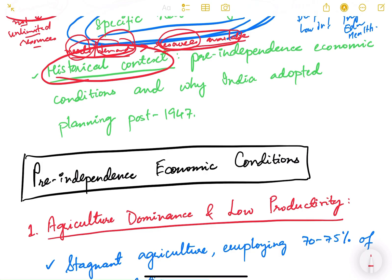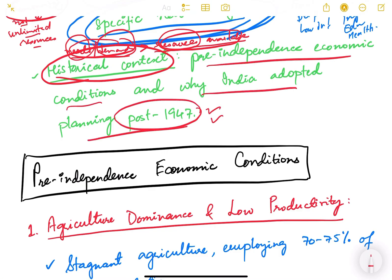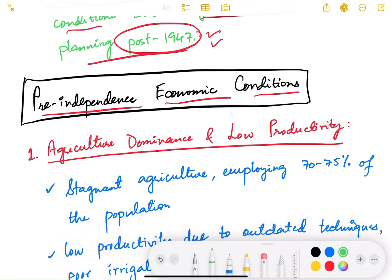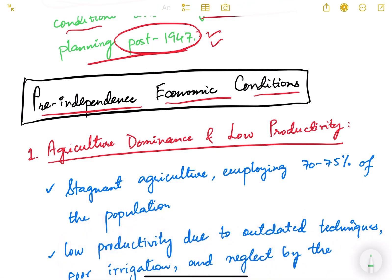Now let us look at the historical context — why did we adopt planning in our country? We will look at pre-independence economic conditions and why India adopted planning post-1947. There might be a direct question in the mains examination: 'Why did India adopt planning as an economic policy after independence?' or 'Write a brief account of economic planning in India after independence.' So we need to understand the pre-independence economic conditions.